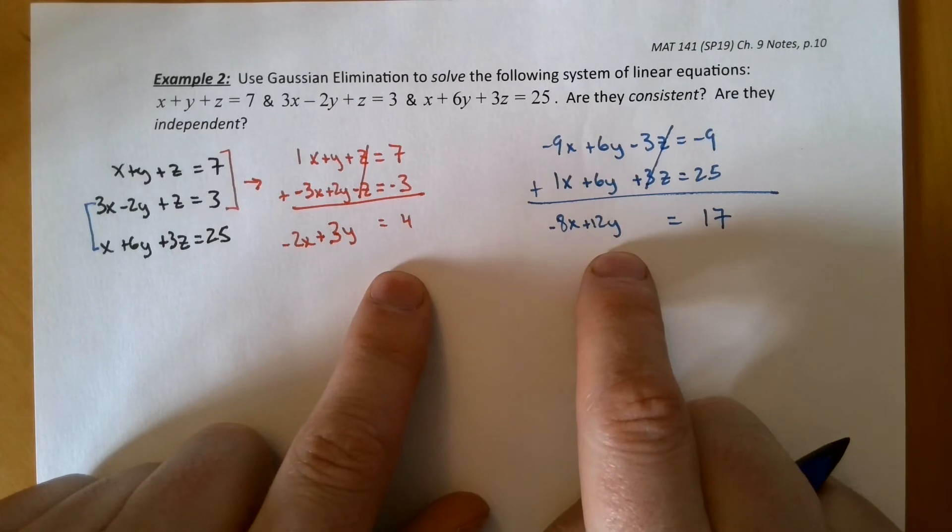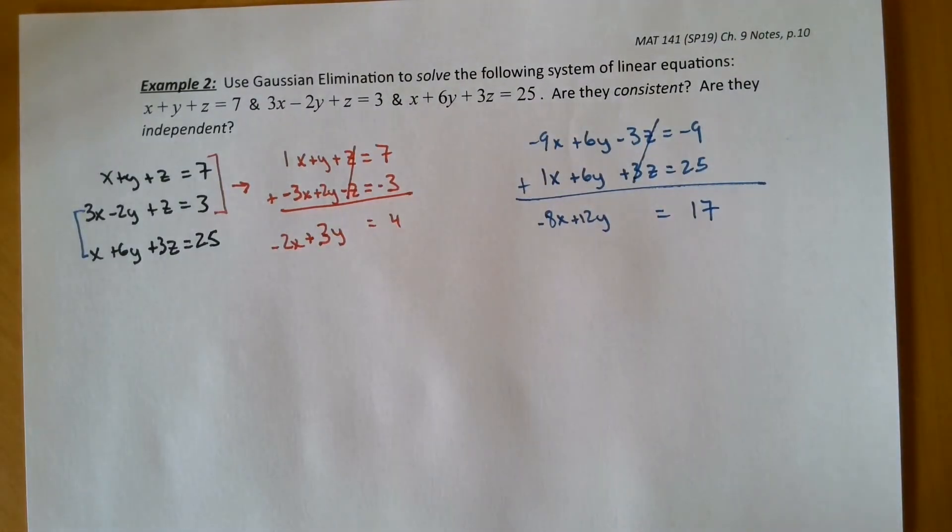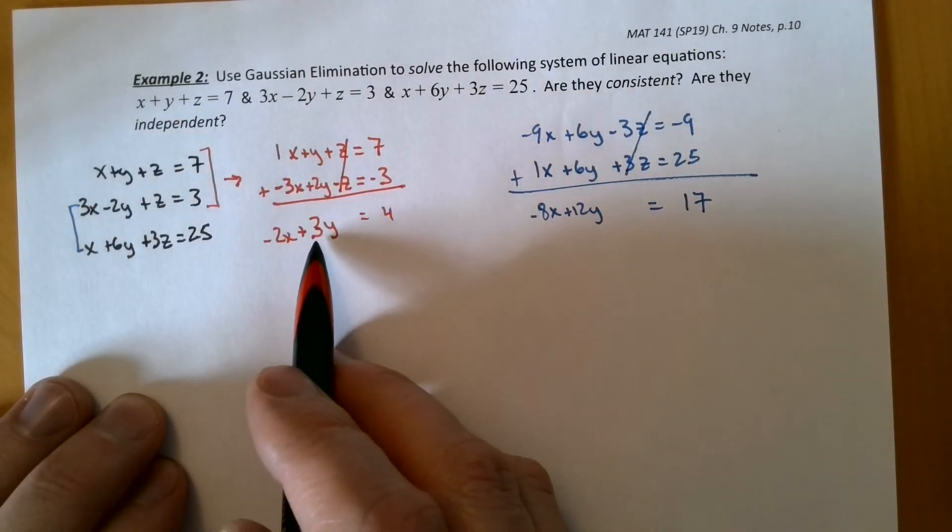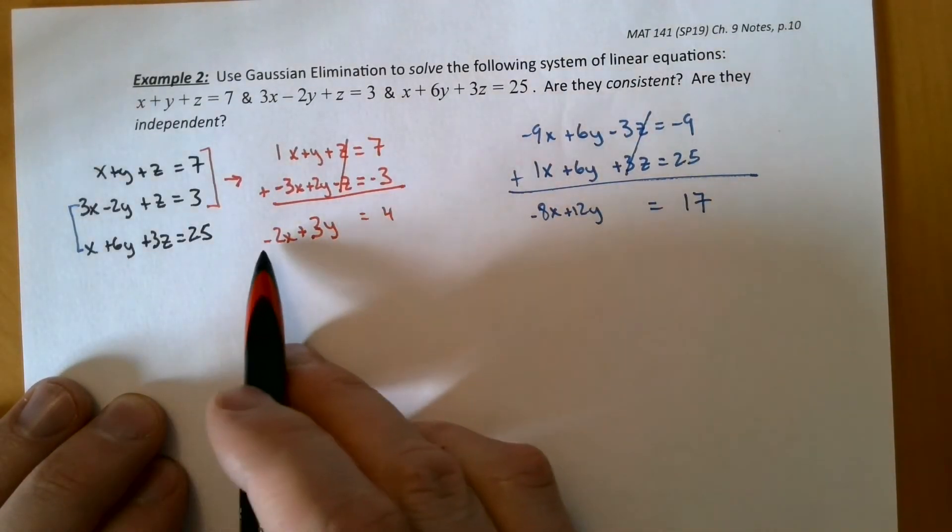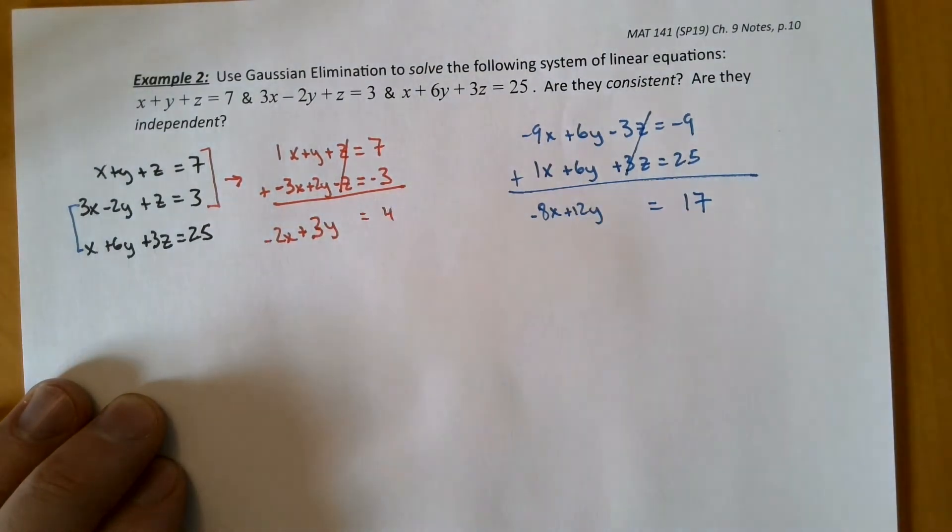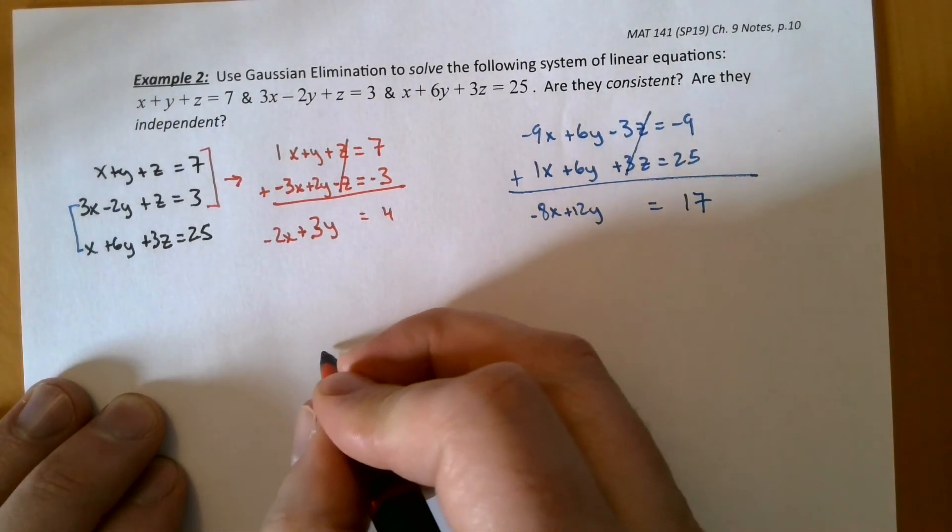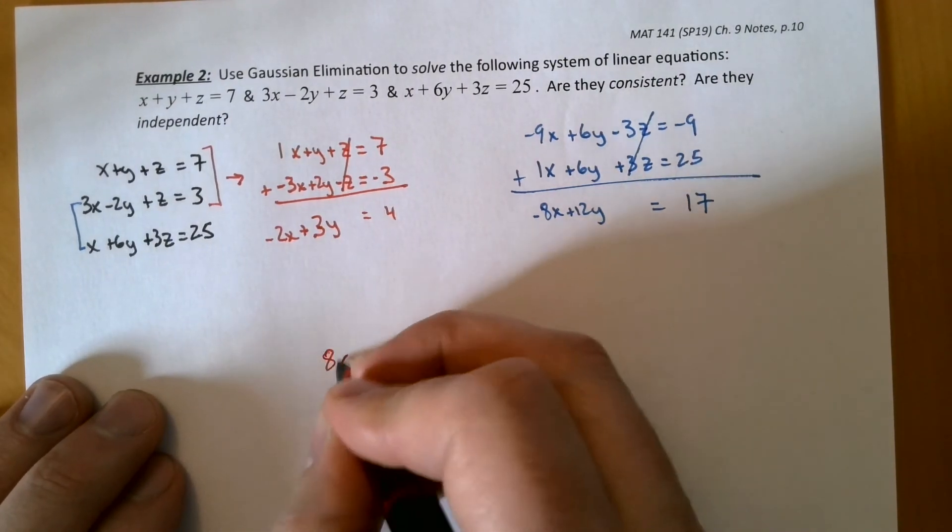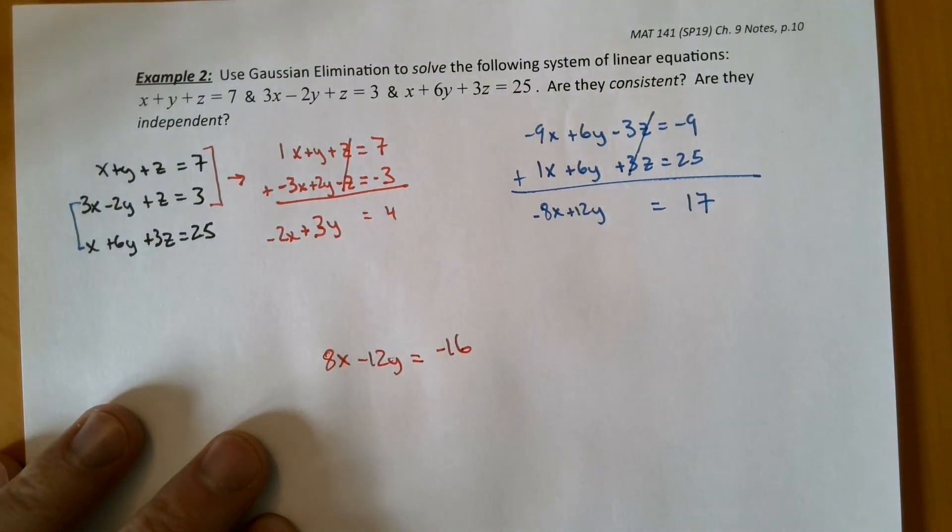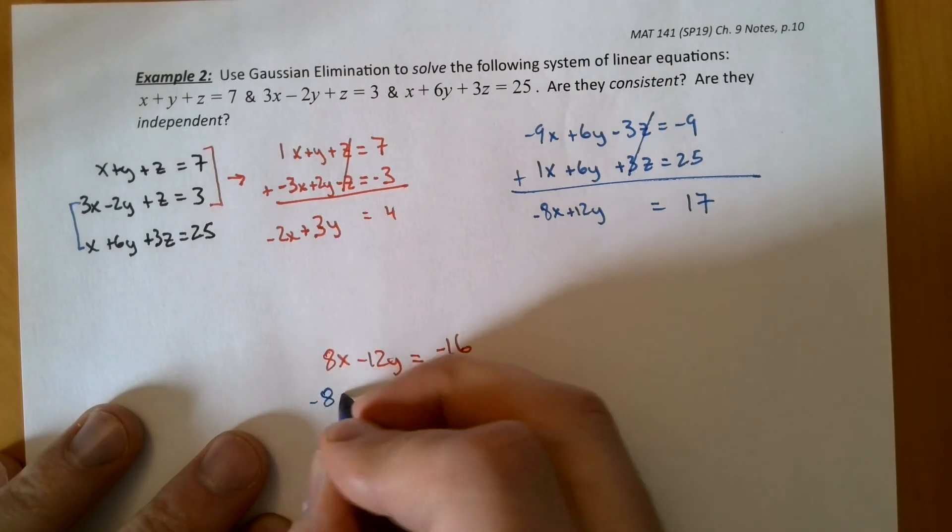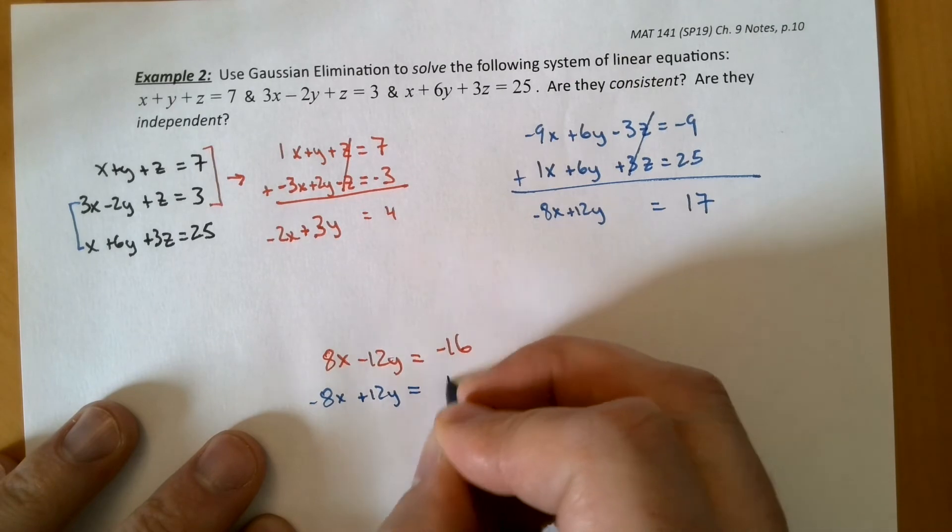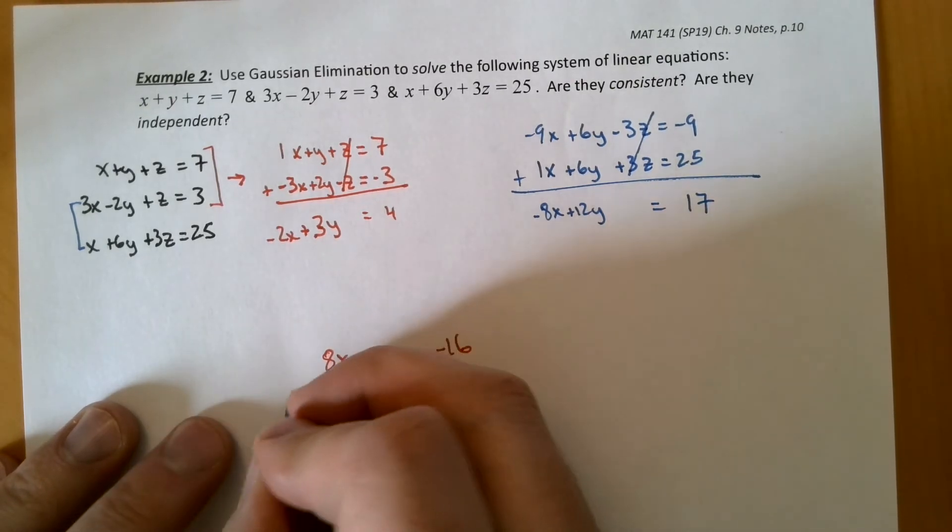So I see that I have a 3 and a 12. So if I multiply this one by, let's say, negative 4, then I'll have opposites right off the bat. So we'll combine those two here. We'll have 8X minus 12Y equals negative 16. And then we'll just leave this other one the same, negative 8X plus 12Y equals 17. And we're going to add these two together.